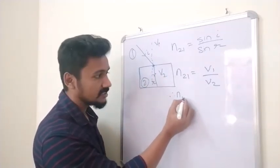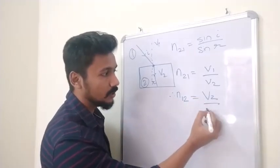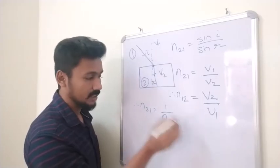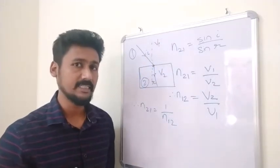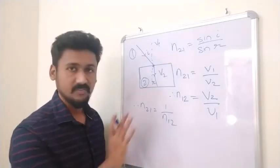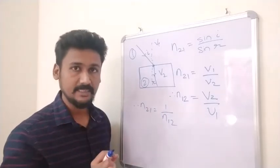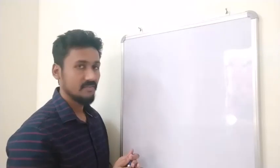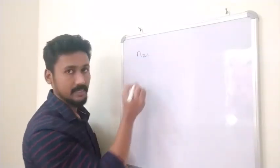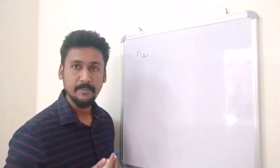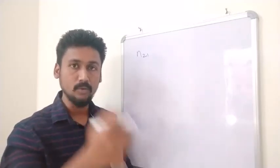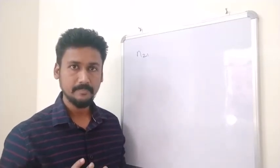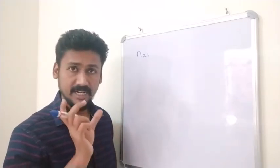Similarly, n12 = v2/v1, and therefore n21 = 1/n12. These are concepts from class 10. Next, we talk about absolute refractive index. When we write n21 it means refractive index of medium 2 with respect to medium 1, and those two media could be any combination — air to glass, air to water, or water to glass.